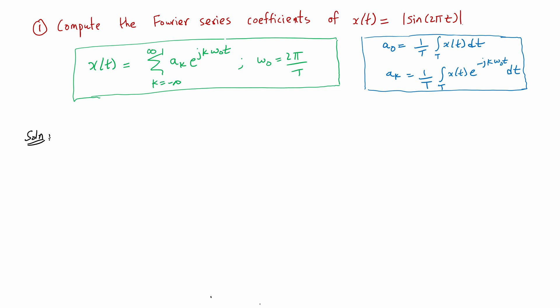In particular, we are interested in figuring out the aₖ's that sit in the Fourier series expansion of x(t), where we express x(t) as a linear combination of basic building blocks. These building blocks are periodic complex exponentials whose frequencies are all integer multiples of the fundamental frequency.